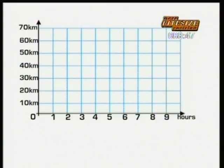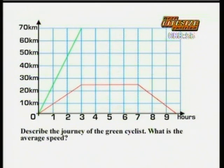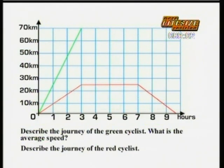Here's a question about interpreting a time and distance graph of two cyclists, green and red. Describe the journey represented by the green line. What average speed was it travelling at? Describe the journey of the red cyclist.